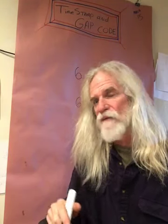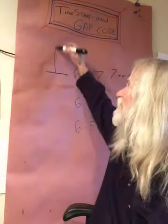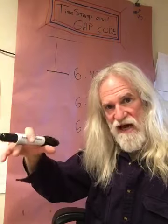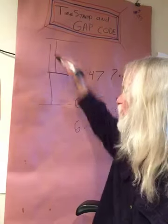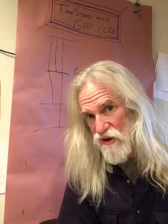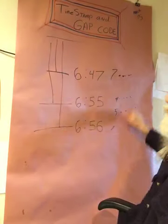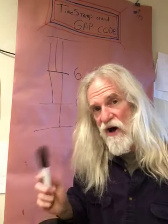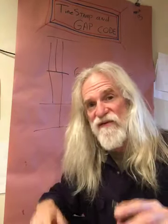Now let's do the original way we do the timestamp and gap code. We take this timestamp here — the first one — and we take the time between it and the first tweet of the day, find the time difference — the gap — and go to that Q drop. With that in mind, we should have three brand new timestamp and gap messages on top of what we just deciphered with the dots.